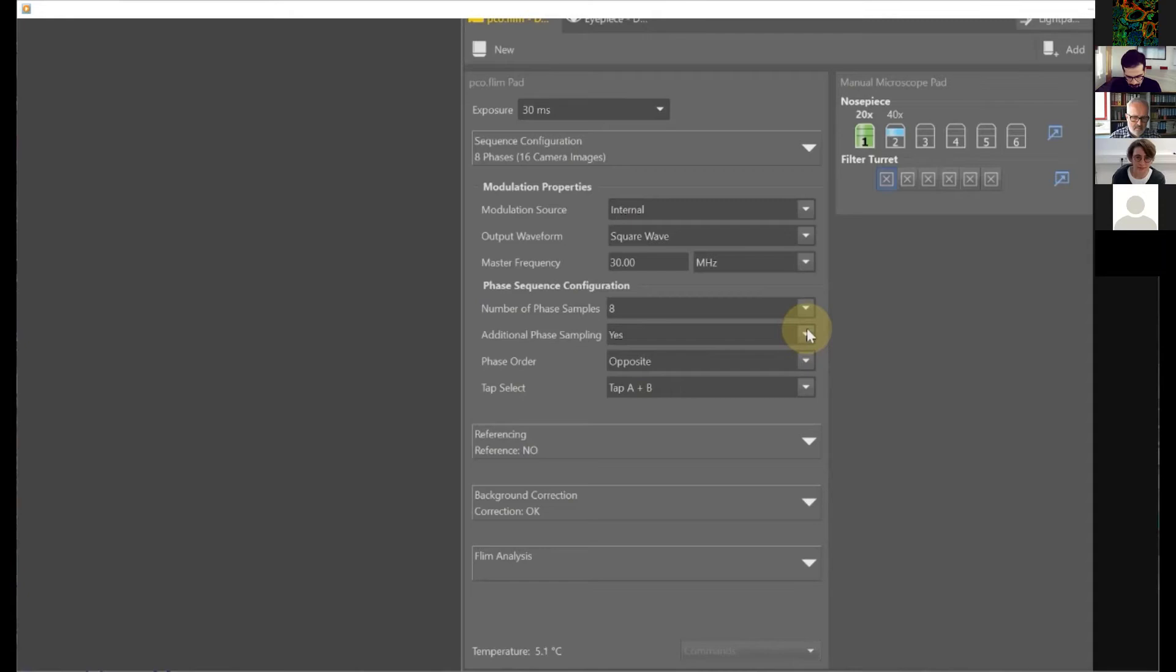The additional phase sampling takes care of the asymmetry correction, which is required to reduce the amount of asymmetry noise caused by slight asymmetries between the two tabs in each pixel. The phase order is only valid if additional phase sampling is set on yes, because this controls the sequence in which the inverse phase samples are taken. This might help in case of strongly bleaching fluorophores to prevent any systematic error. The tab select button allows for selection of reading out either only one or the other tab, or both, which is the usual case.